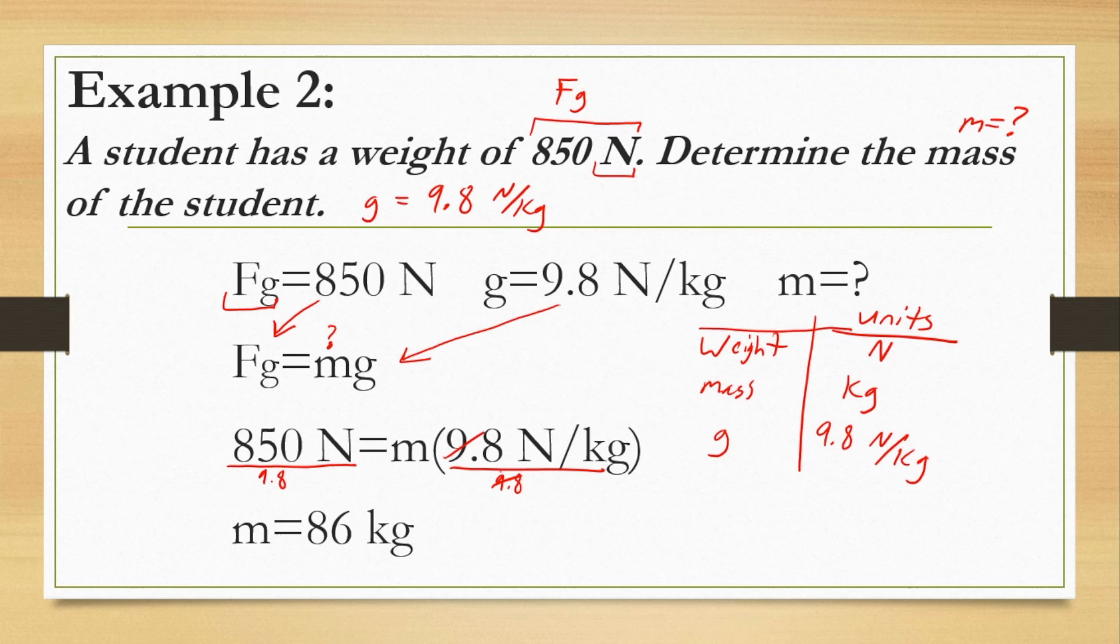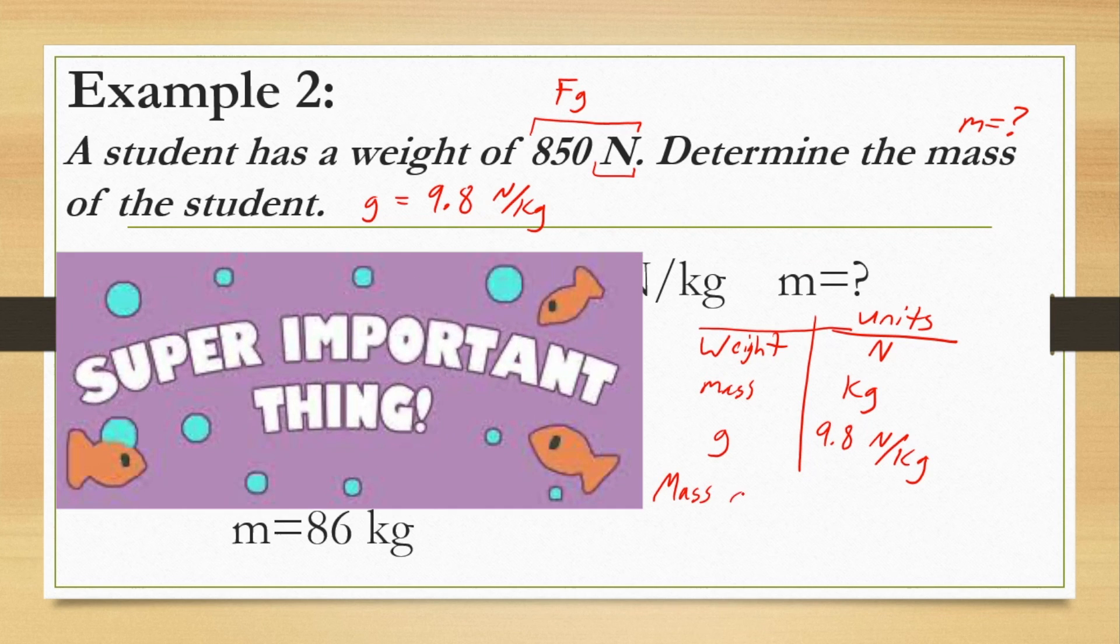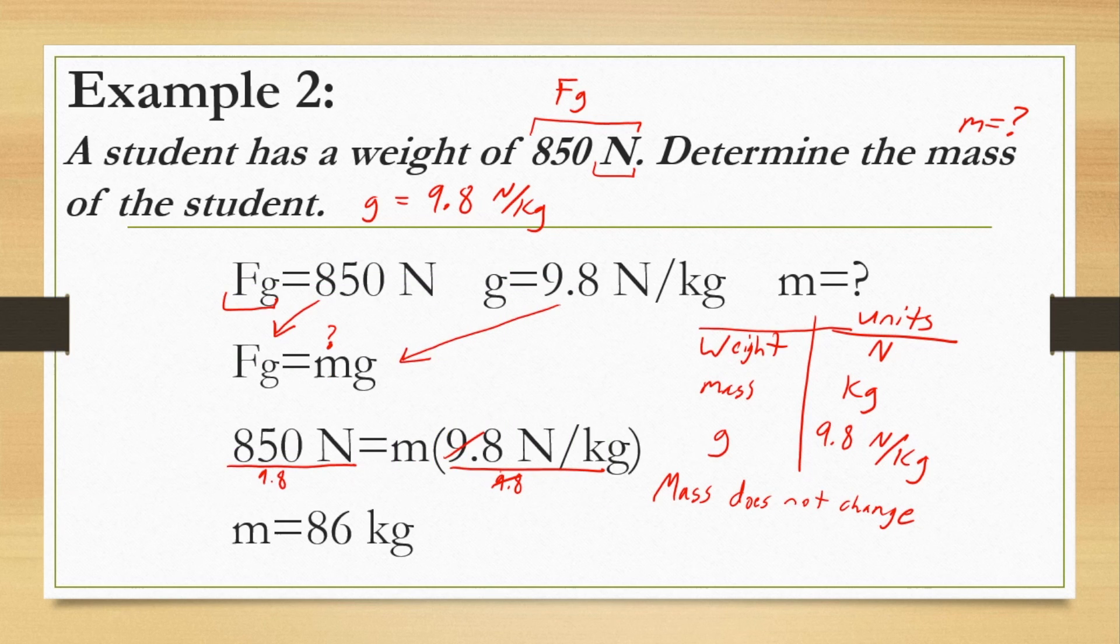Last little piece of advice as well, super important, is you need to remember that mass does not change. Mass does not change because mass is the total amount of matter that an object has. No matter where that object may be, whether it's on earth, in space, on the moon, on Venus, it still has that same total amount of matter.